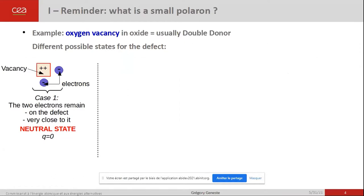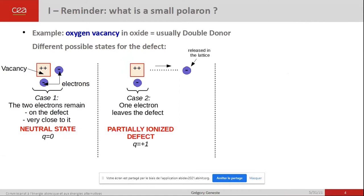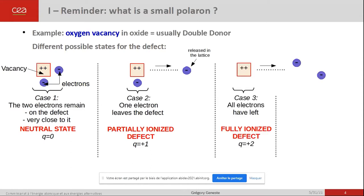If the two electrons remain either on the defect or very close to it, the defect is said to be in a neutral state. If one electron leaves the defect and is released in the lattice, the defect is said to be in a partially ionized state. And finally, if the two electrons leave the defect and go away far from it, the vacancy is said to be fully ionized.